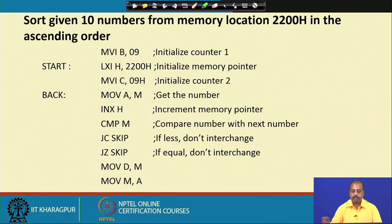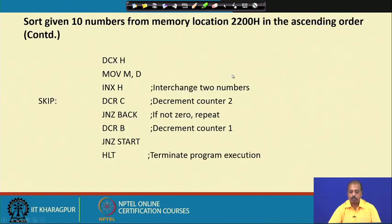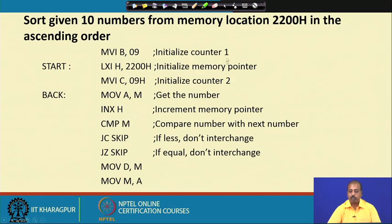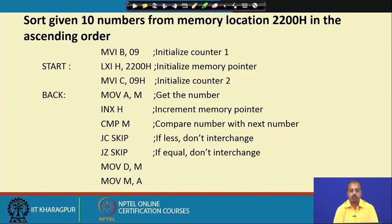Next, we want to sort 10 numbers stored in memory from location 2200 hex onwards in ascending order. For sorting we use a simple bubble sort type of algorithm: compare two successive numbers, and if they are out of order swap them; if they are in proper order, do not alter them. This process is repeated for all possible pairs. We initialize the B register to 9 because the first index goes from 1 to 9 and the second index from 2 to 10.